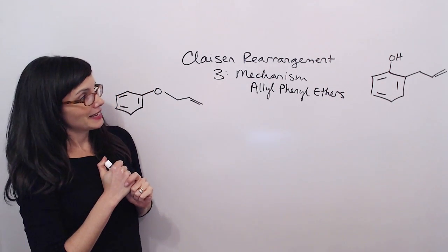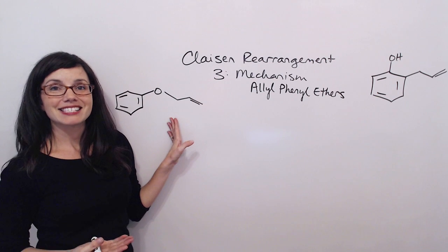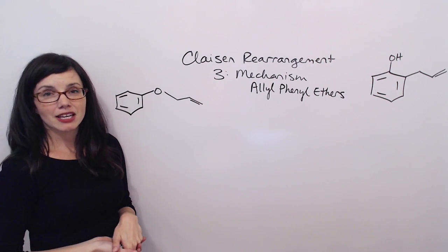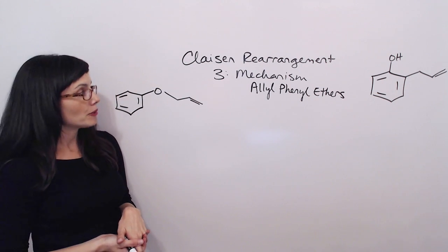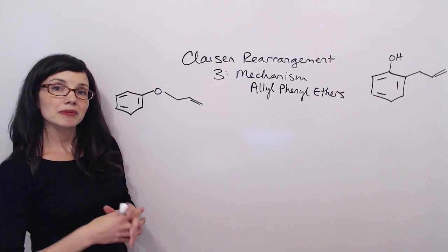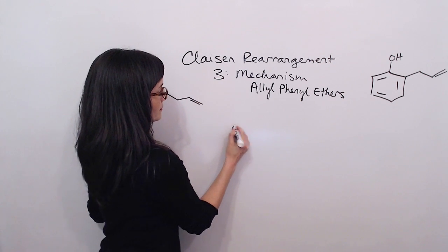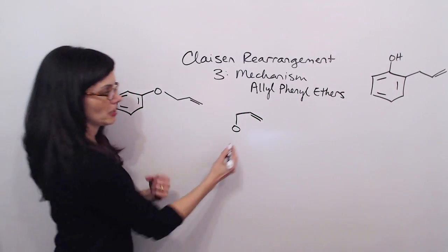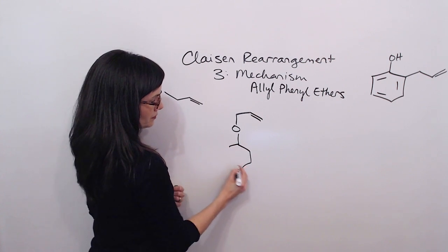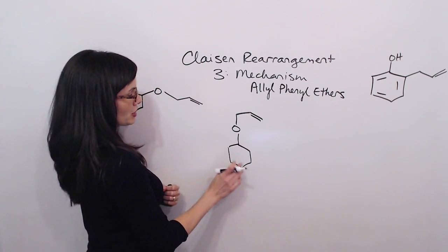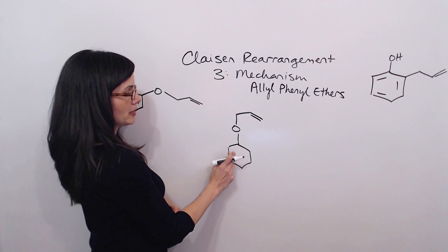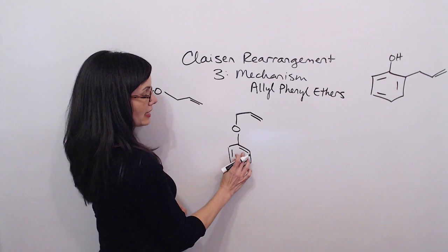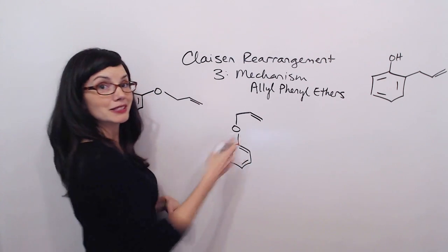Now we need to think about how we want to set this up to do the mechanism. And that's really the same way that we set it up to predict product. We want to put the allyl group on top, bending over to the right. And we want to put the phenyl group down below. And we want to make sure that when we put our bonds in, we put in the first bond to the top right so that it can interact with this double bond.